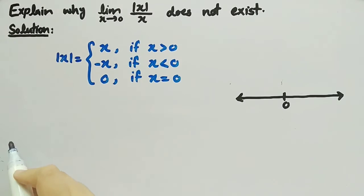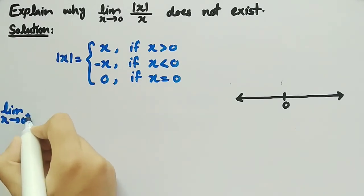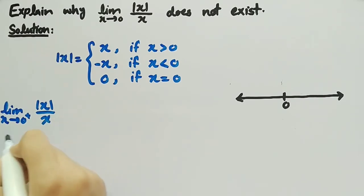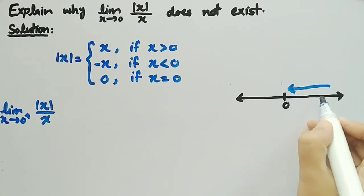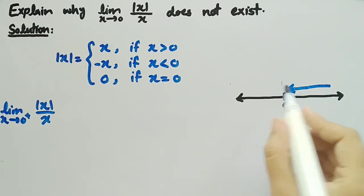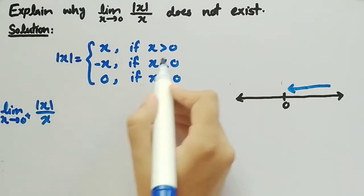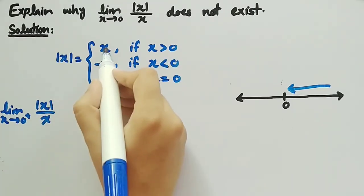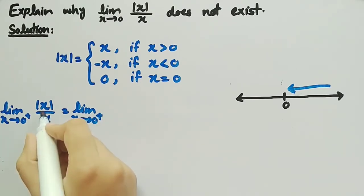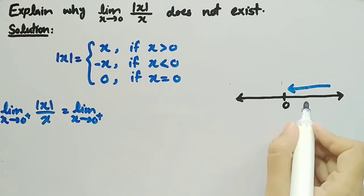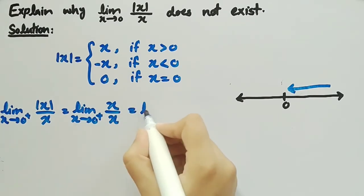First, we will find the right-hand limit of the given function. We write: limit as x approaches 0 from the right of mod(x) divided by x. In the right-hand limit, x is approaching 0 from the right side, and we know that on the right side of 0 there are all positive values of x, that is, x is greater than 0. From the definition, when x is greater than 0, mod(x) equals x, so we replace mod(x) by x.